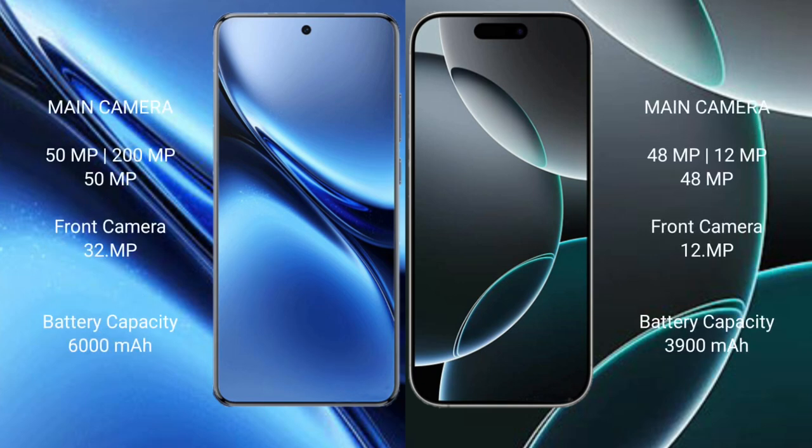Vivo X200 Pro features a triple rear camera setup of 50MP plus 200MP plus 50MP, and a front camera of 32MP. iPhone 16 Pro features a triple rear camera setup of 48MP plus 12MP plus 48MP, and a front camera of 12MP.